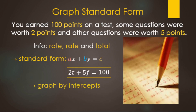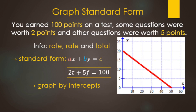When we have standard form, the strategy for graphing is going to be to graph by the X and Y intercepts. Each form has a different strategy for graphing. Here's the graph. For a quick preview: to find the X-intercept, we divide 100 by 2, giving us 50. And for the Y-axis, we go 100 divided by 5, which makes 20. We'll break this down more as we go.